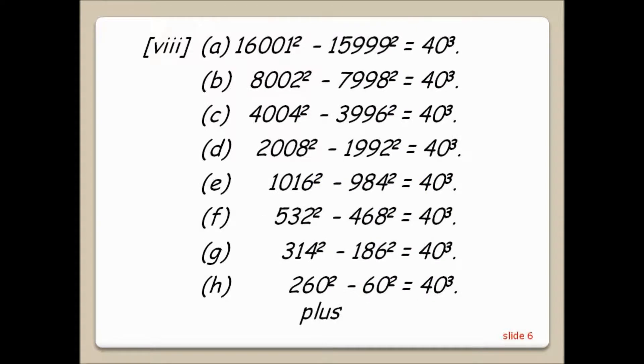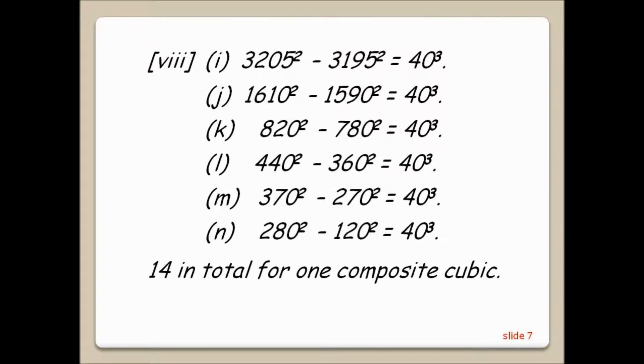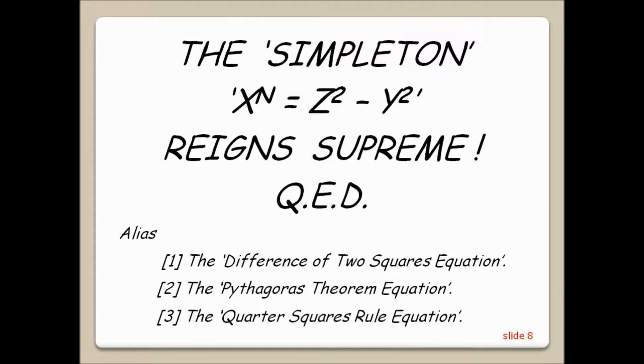Having just equated 41 cubed as the difference of 2 squares but in only 2 possible ways, this slide and the next give 40 cubed as the difference of 2 squares in 14 ways. What lesson are we to take away from this simple demonstration? The choice is yours. My choice is the simpleton x to the n equals z squared minus y squared reigns supreme QED.